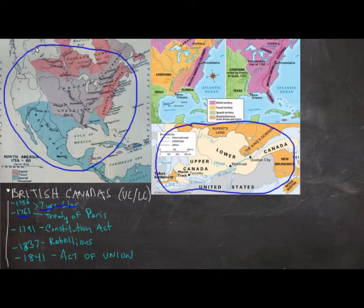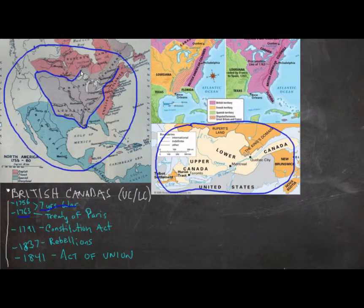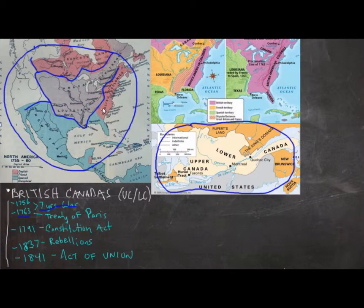The war was about trade, and about a million people ended up dying. In North America during the war, you can see here that this holding, called New France, was the French holding. Compared to the Spanish holding and the British holding in red, it was a pretty large chunk of land.